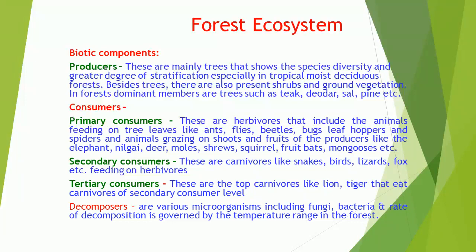Primary Consumers: These are herbivores that include animals feeding on tree leaves like ants, flies, beetles, bugs, leafhoppers, and spiders, and animals grazing on shoots and fruits of the producers like the elephant, nilgai, deer, moles, shrews, squirrel, fruit bats, mongooses, etc.